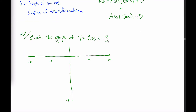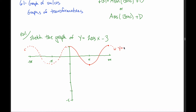It helps to have in mind what the graph of y equals cosine of x looks like. Even though this graph continues forever in both directions, it's easier to focus on one revolution — drawn in solid here, with dotted lines showing how it continues.